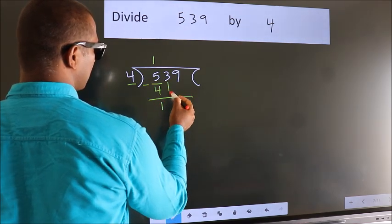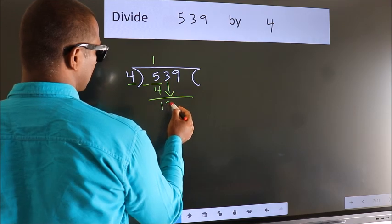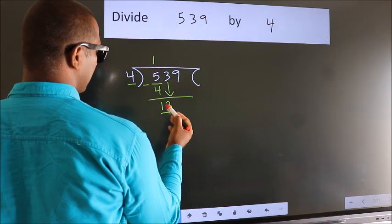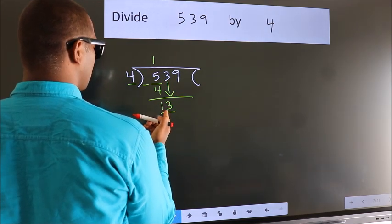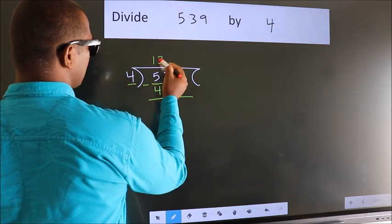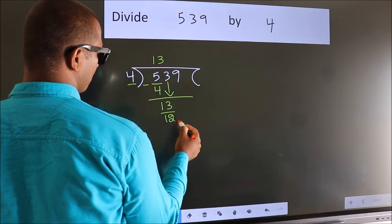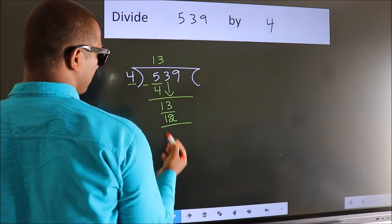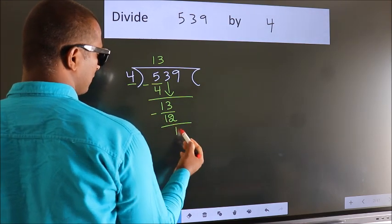After this, bring down the next number. So, 3 down, making 13. A number close to 13 in the 4 times table is 4 threes, which is 12. Now we subtract and get 1.